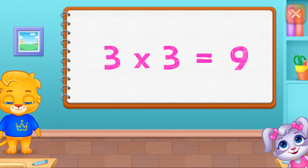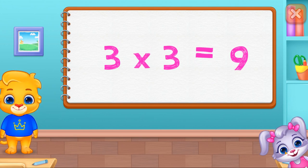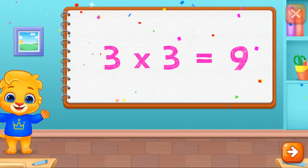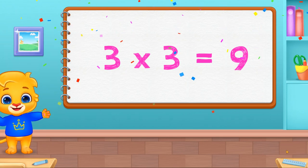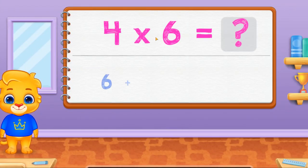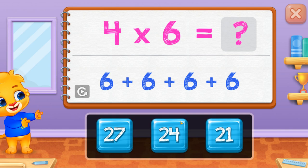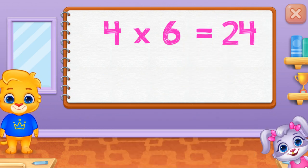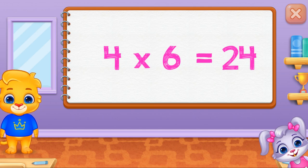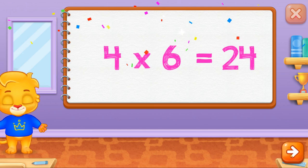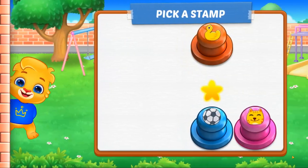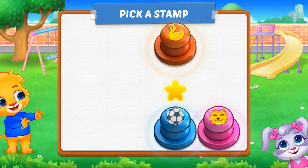Three times three equals nine. Twenty-four. Four times six equals twenty-four. Pick a stamp.